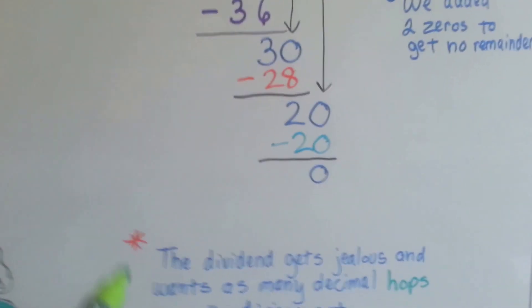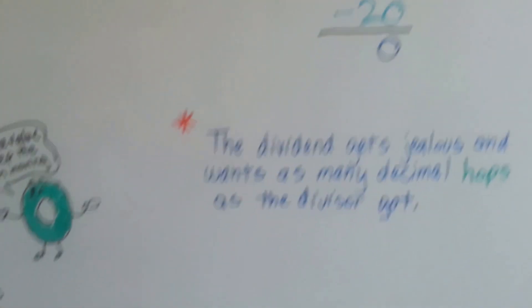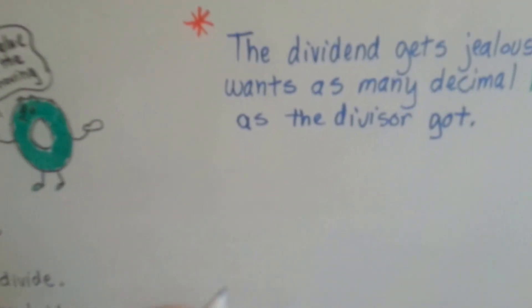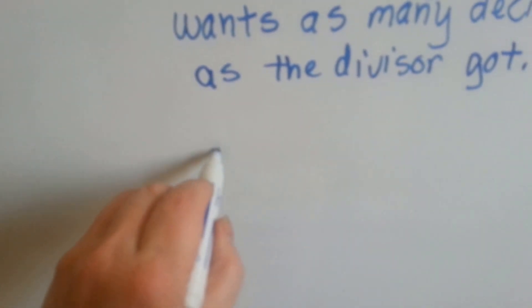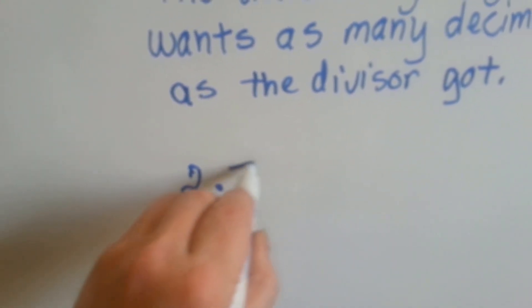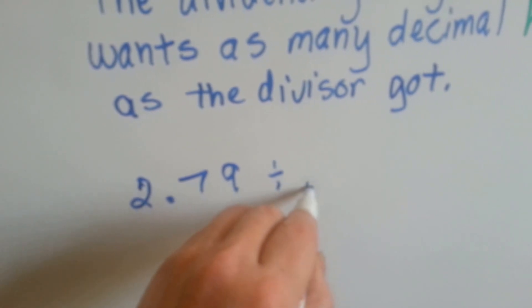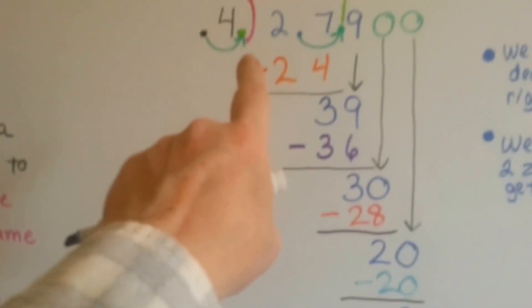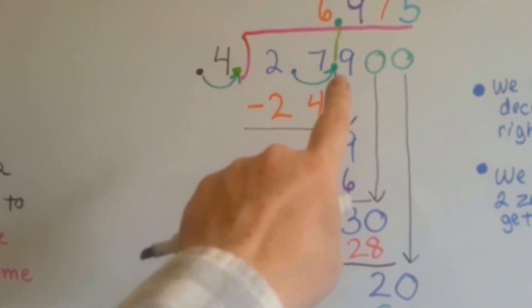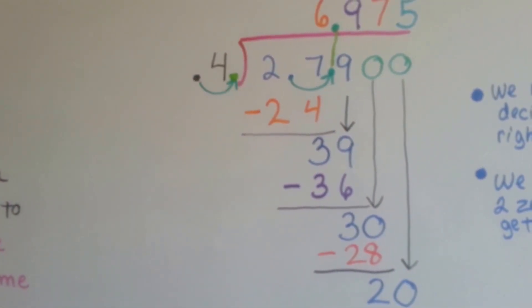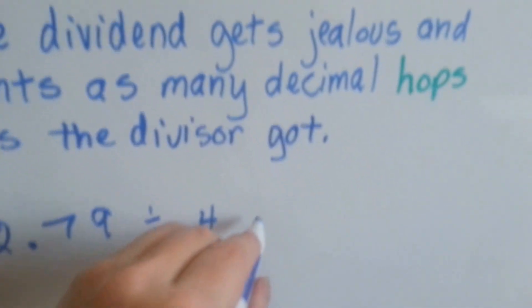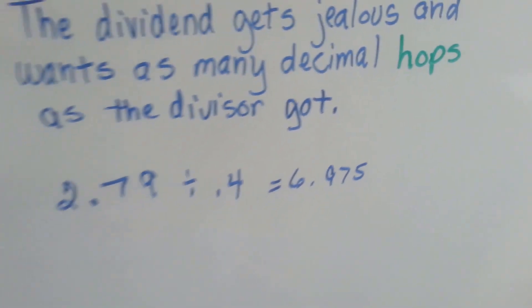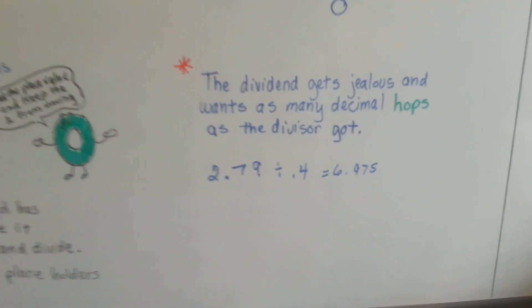So this is what originally happened, okay? Let me change colors on my marker. This is the problem we had. We had 2 and 79 hundredths divided by 4 tenths. That was the original problem, 2 and 79 hundredths divided by 4 tenths. And it ended up equaling 6 and 975 thousandths by doing long division. See that?